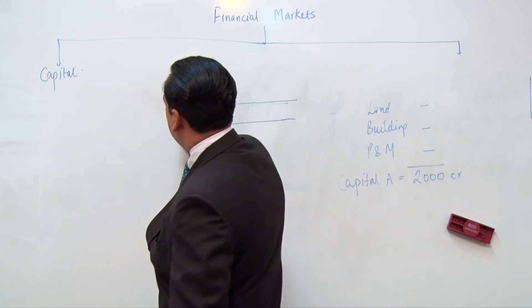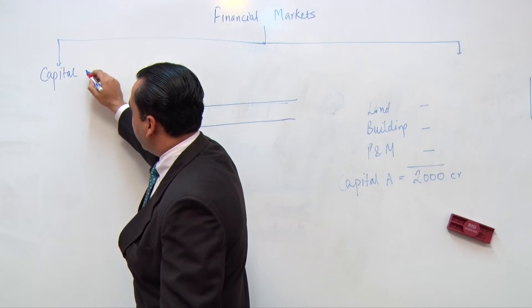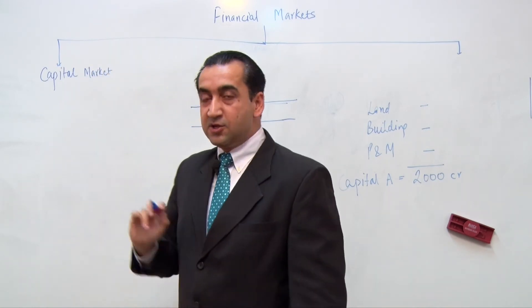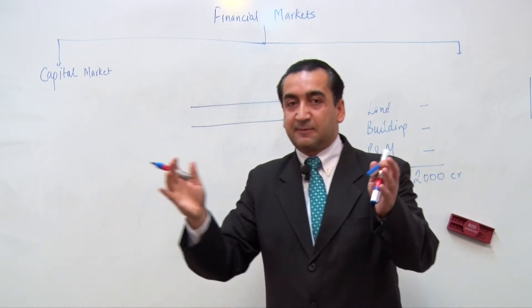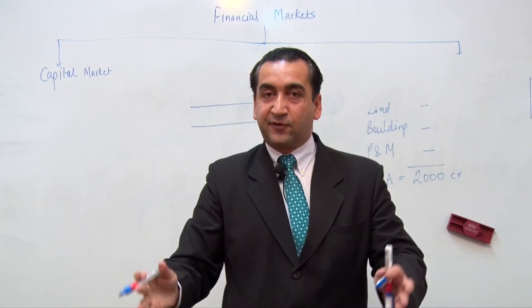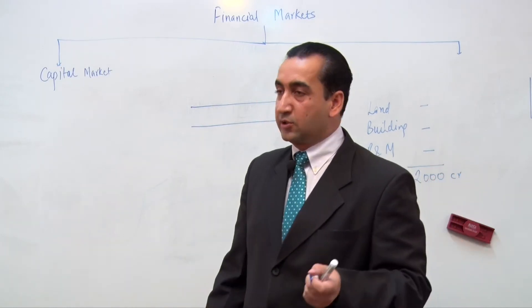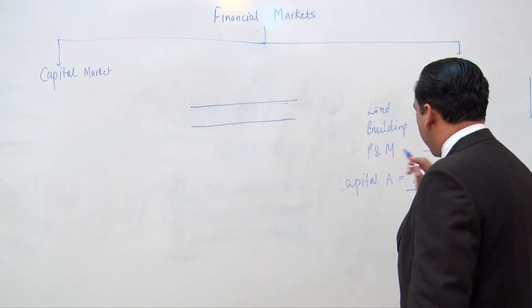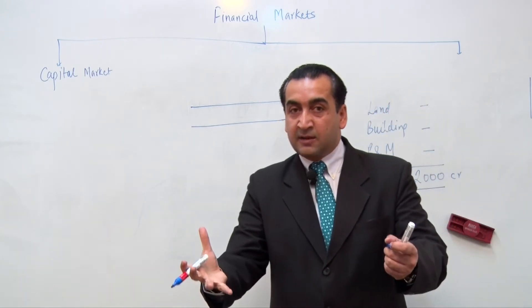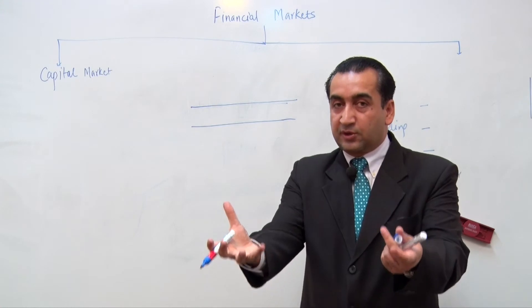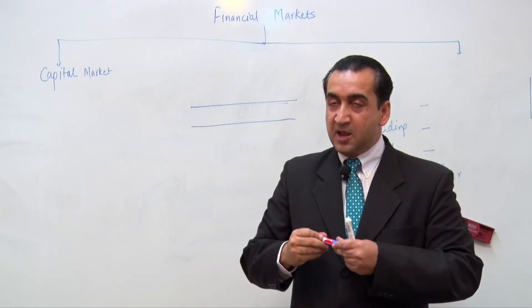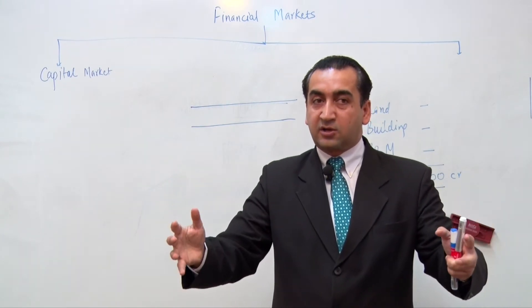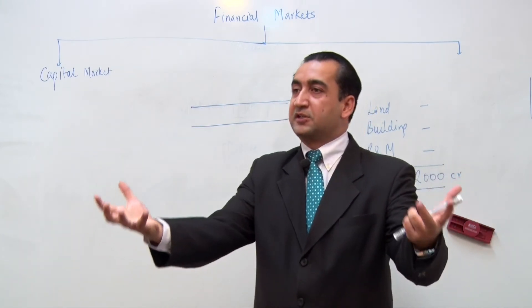Now I am classifying the financial market into its first subset, and that is capital market. Capital market can be termed as a place where buyers and sellers would meet for capital, that is long-term funds. The question is from where this money would come and how much time the system would take to raise this money from the market. 2000 crores is a relatively bigger size of fund and contributions from the market would certainly be needed.